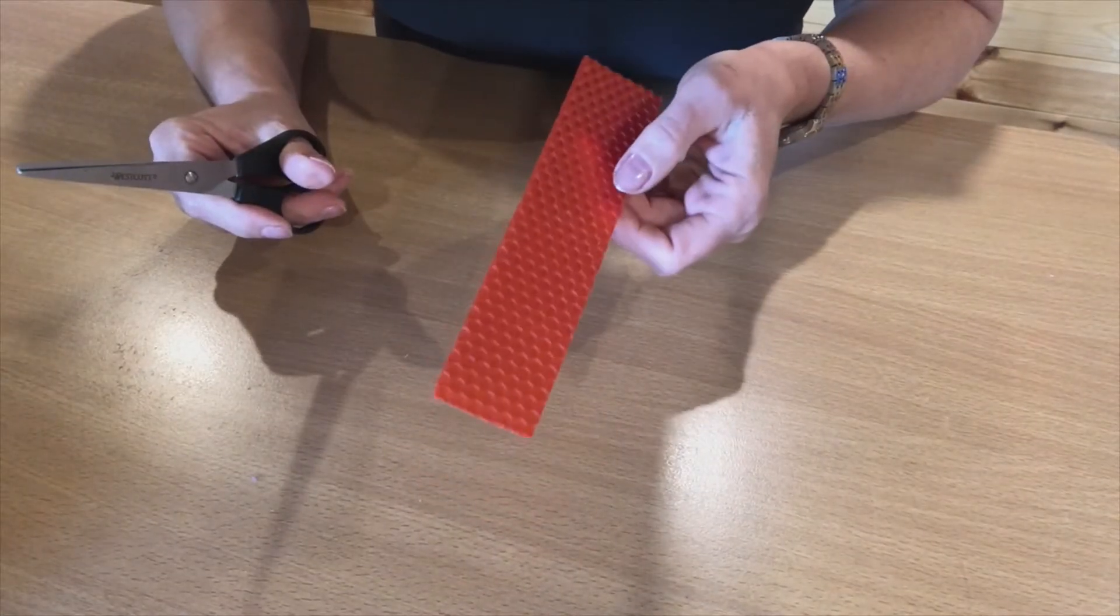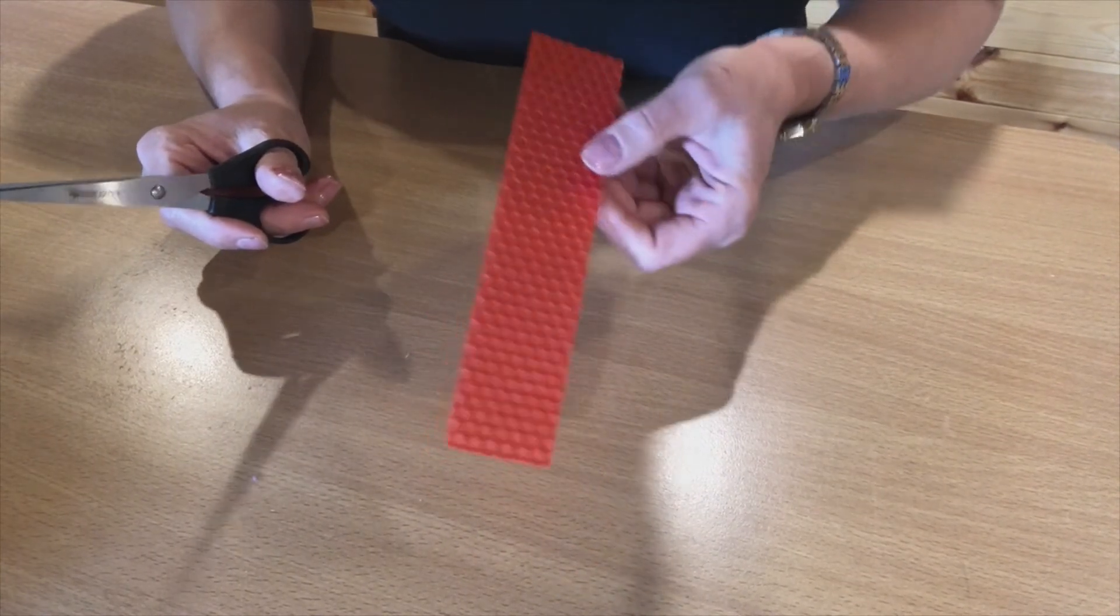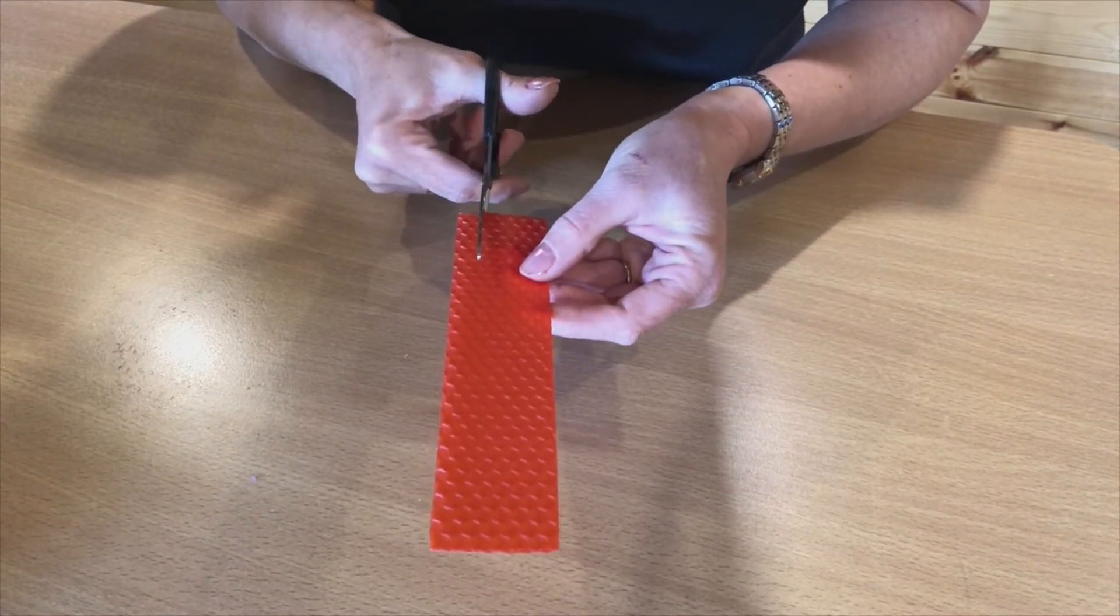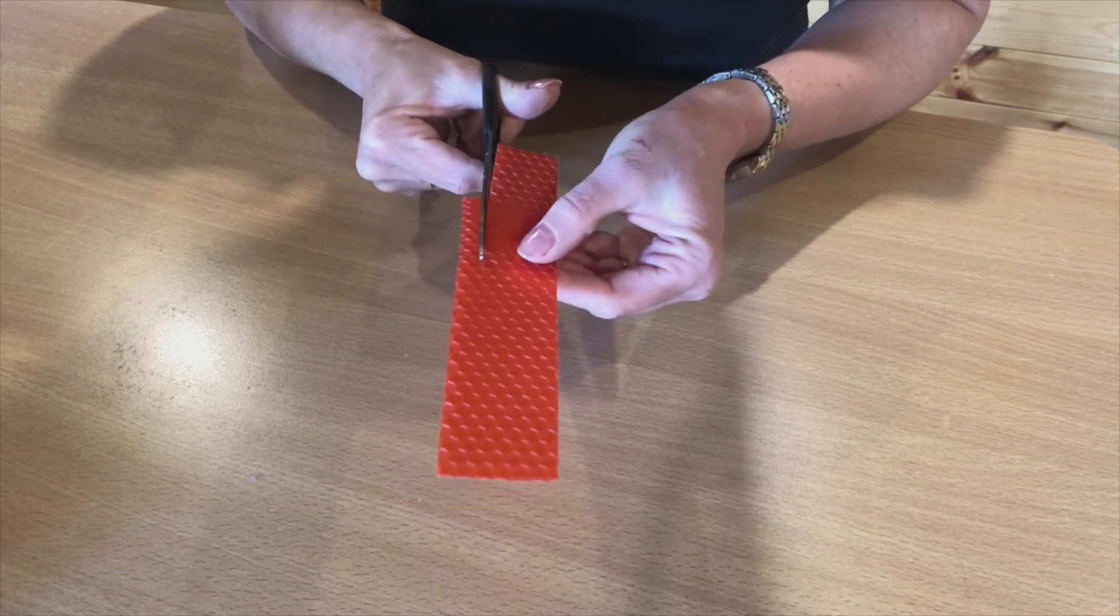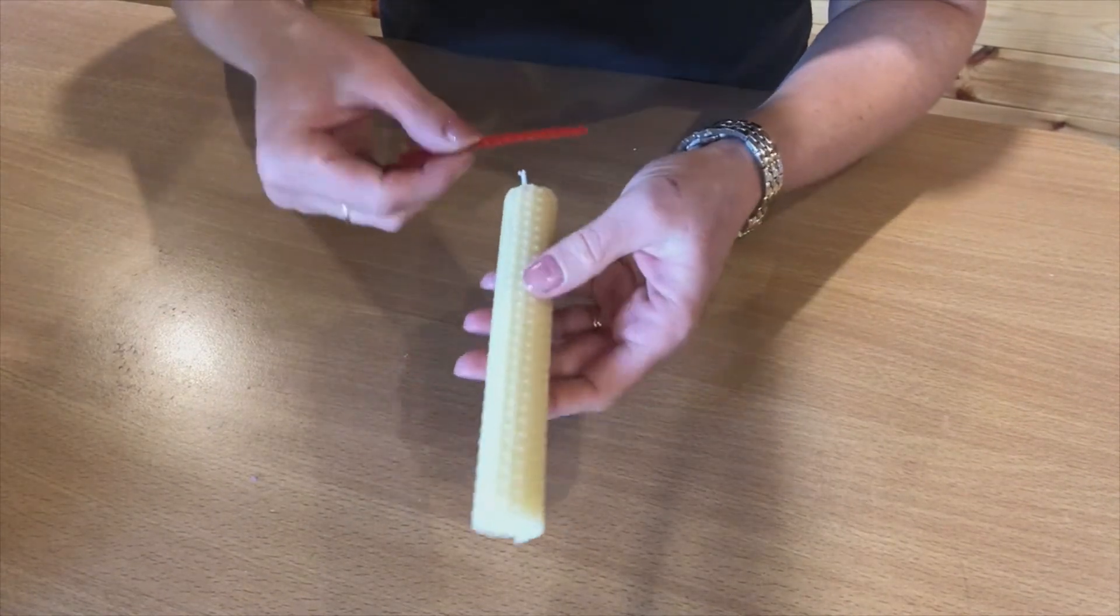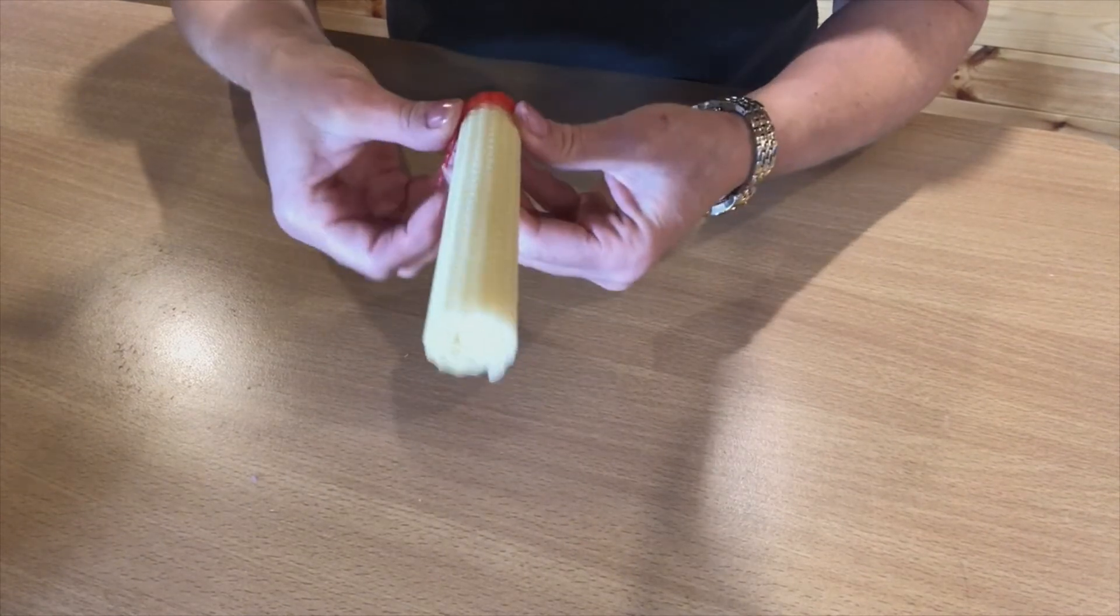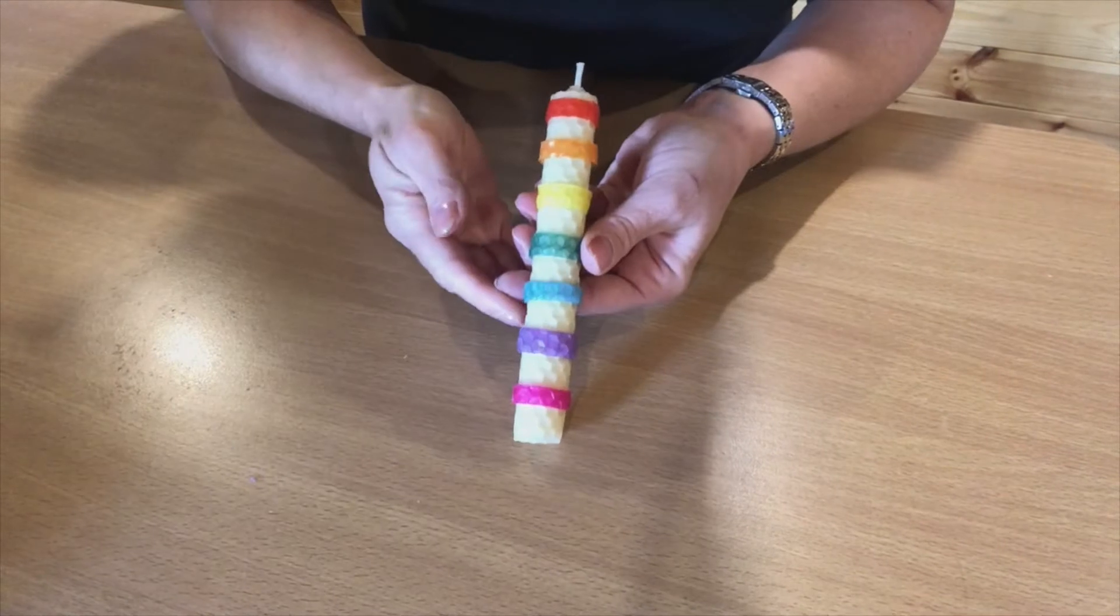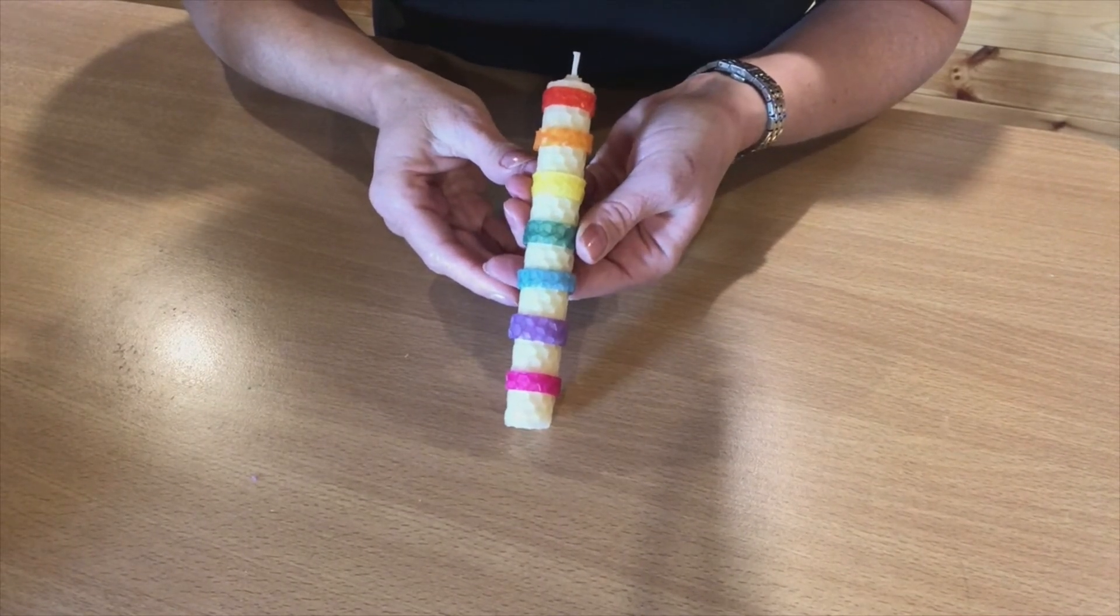The next candle is a rainbow candle. With one of your wax offcuts, cut a long strip about half a centimeter wide. Get your candle and press the strip onto the candle all the way to the end. Repeat the process with all the different colors and you eventually end up with a rainbow candle.